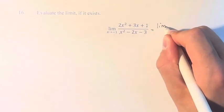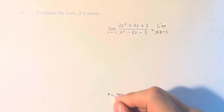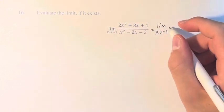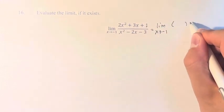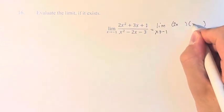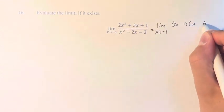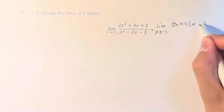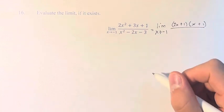So we have the limit as x approaches negative 1 of... up here we have a trinomial, so I'm going to separate it like this. 2x squared is 2x times x, 1 is equal to 1 times 1, and since these are the only options, we can just factor it very quickly.